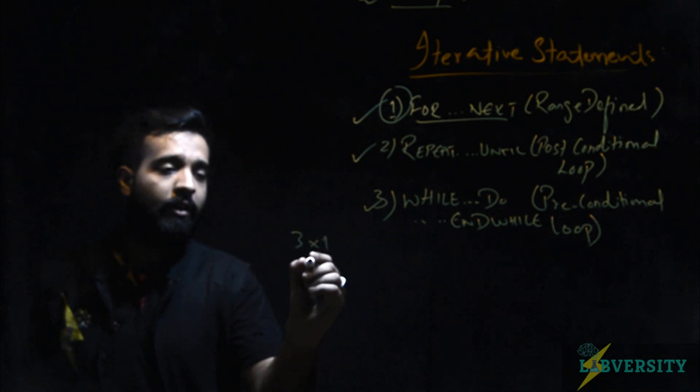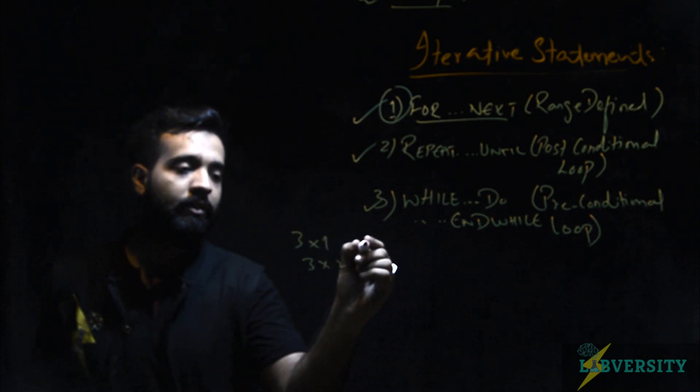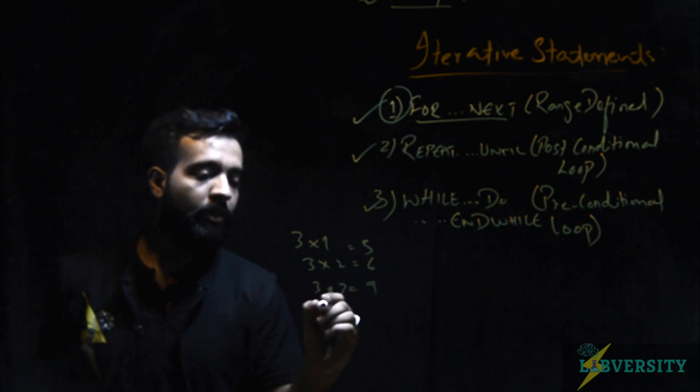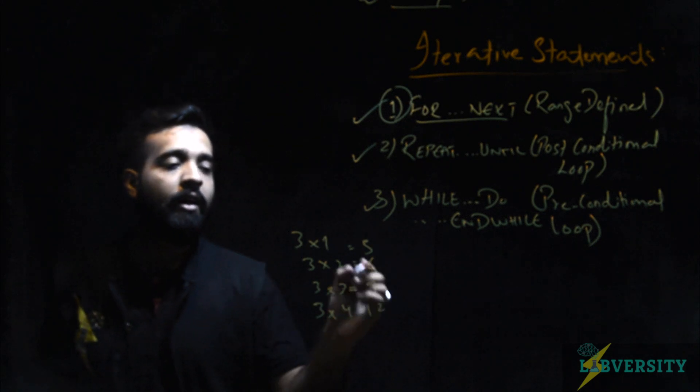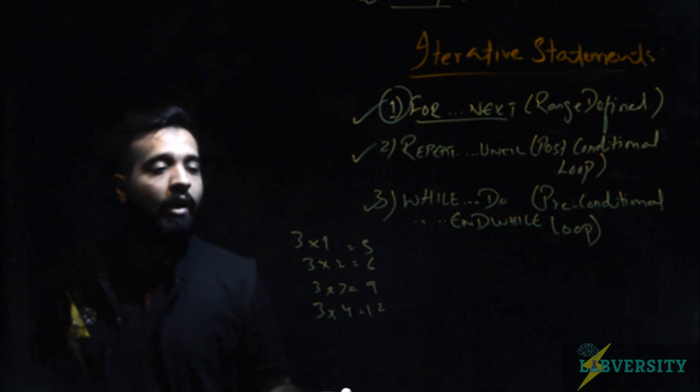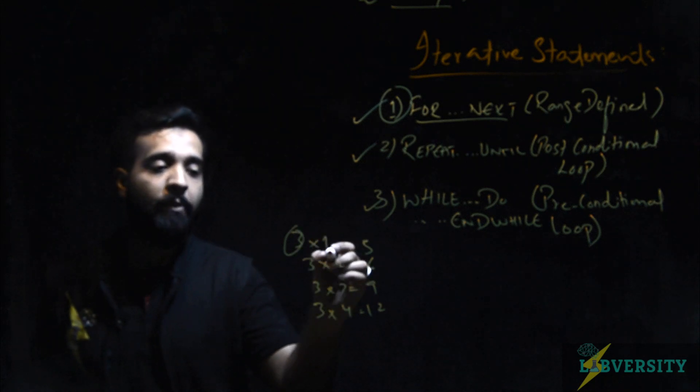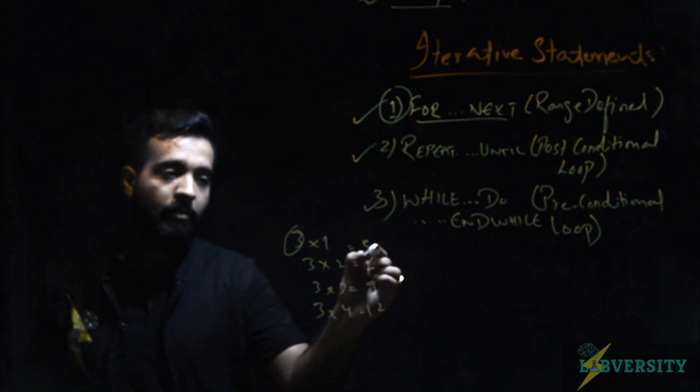For example: 3 ones are 3, 3 twos are 6, 3 threes are 9, 3 fours are 12. Instead I can write one line of code and then this 3 will automatically be multiplied by every preceding number and the multiple will be given.